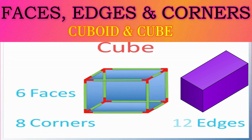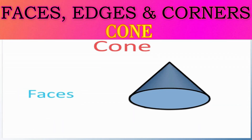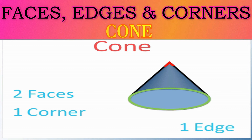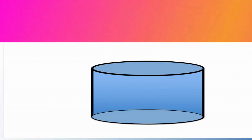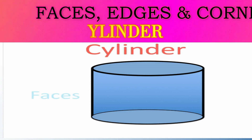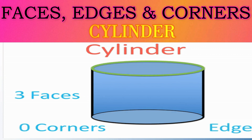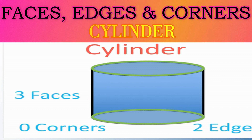So we have six faces, eight corners, and 12 edges in a cube and cuboid. Now we will discuss the cone. A cone has a first face and second face — so total two faces. There is one corner. It has one edge. Now for the cylinder: cylinder has first face, second face, third face — so total three faces. How many corners? Zero corners. It has two edges — first edge and second edge.